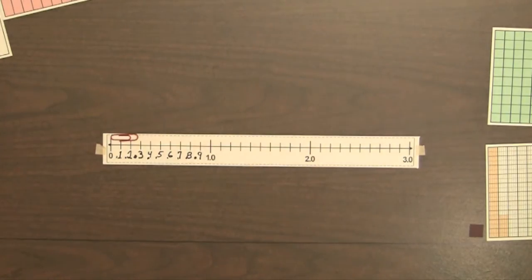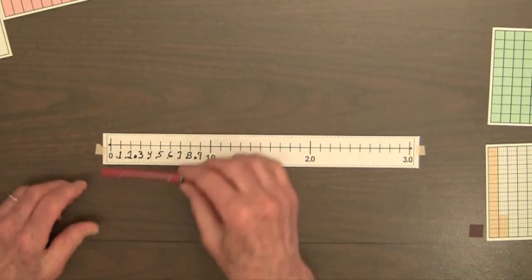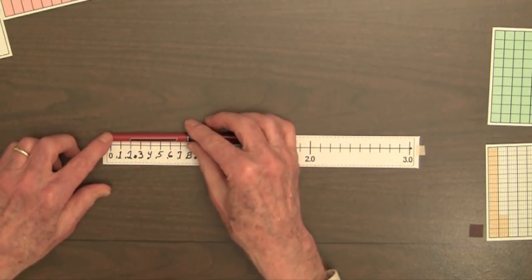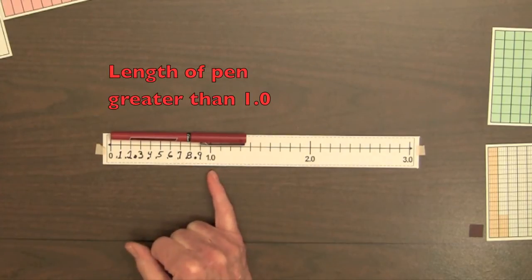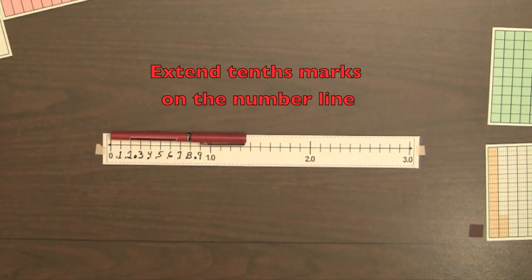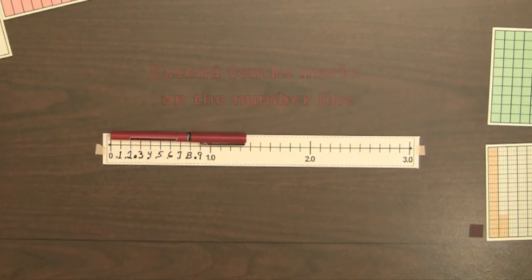Some objects are too long to measure from 0 to 1.0. For example, the length of this pen has a length greater than 1.0, so we will extend the tenths from 1.0 to 2.0.